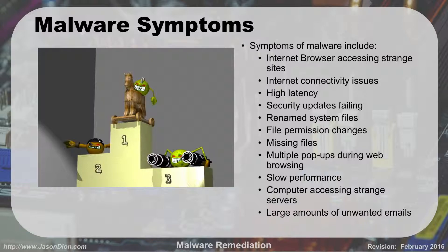Security updates are failing — you're trying to update Windows security or Windows updates and it keeps saying installation failed. The reason may be that some files have been attacked by malware and you can't overwrite those files because they're currently in use. You can also have system files that are renamed, file permissions that have been changed, or files that are missing because viruses have deleted them.